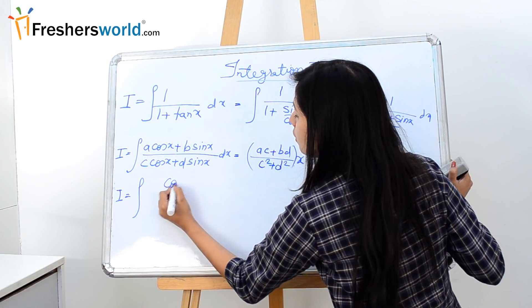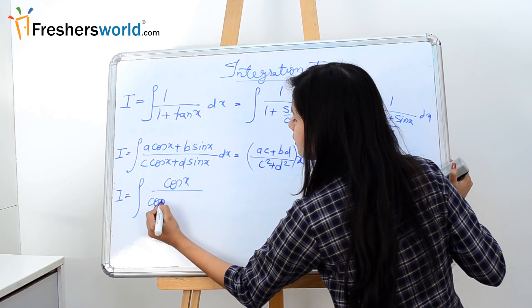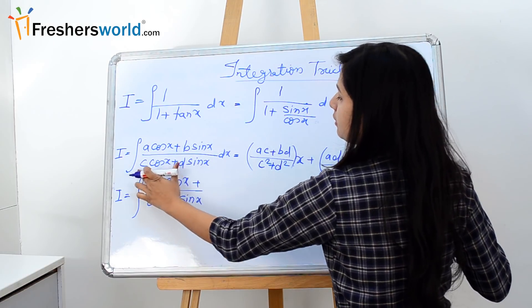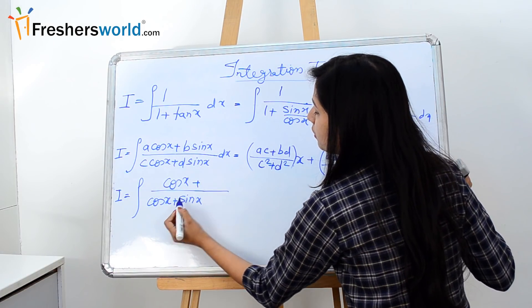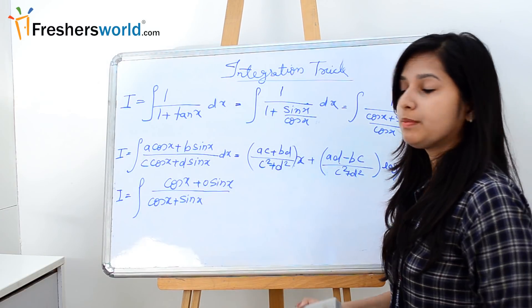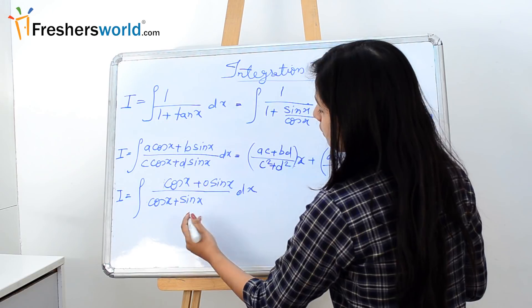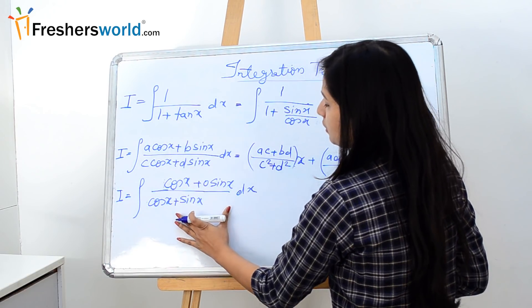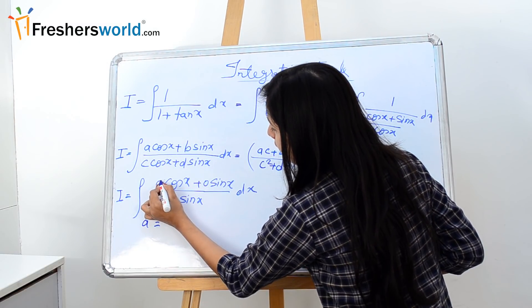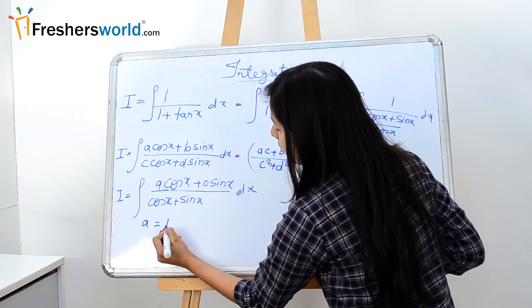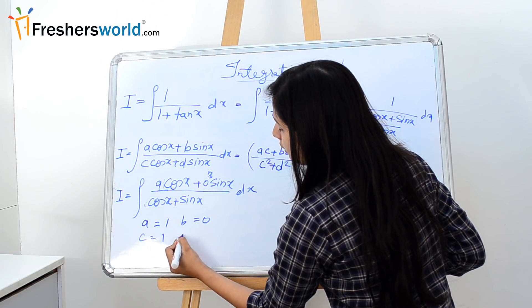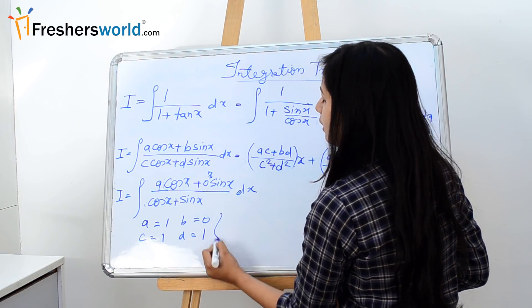Now to format it in our formula, we can write the numerator as 1·cos x + 0·sin x, since 0 × sin x = 0. So now we have already formatted our question into the formula with a = 1, b = 0, c = 1, and d = 1.